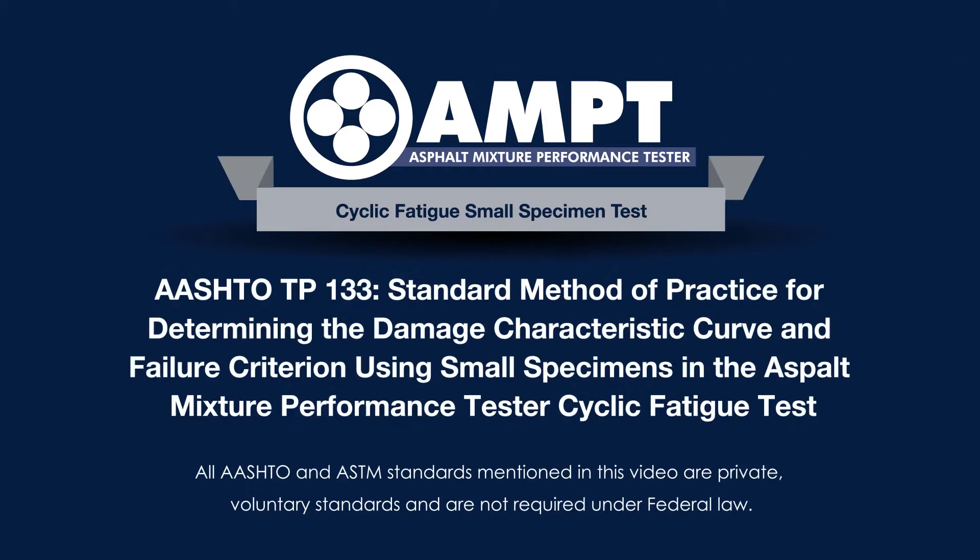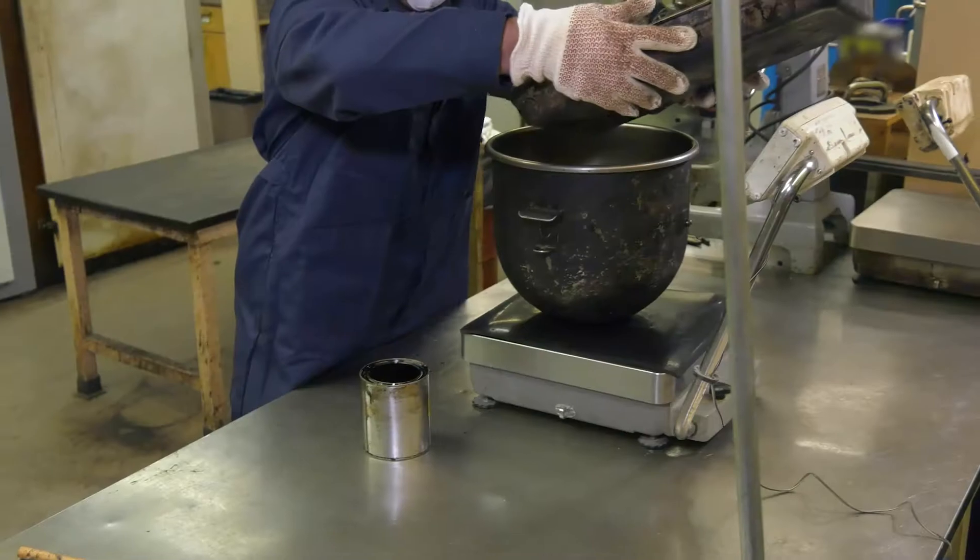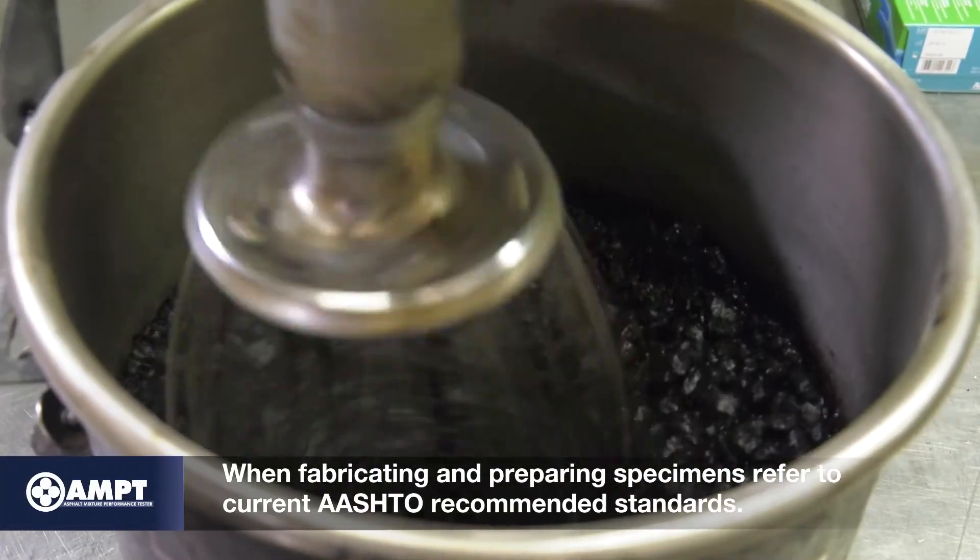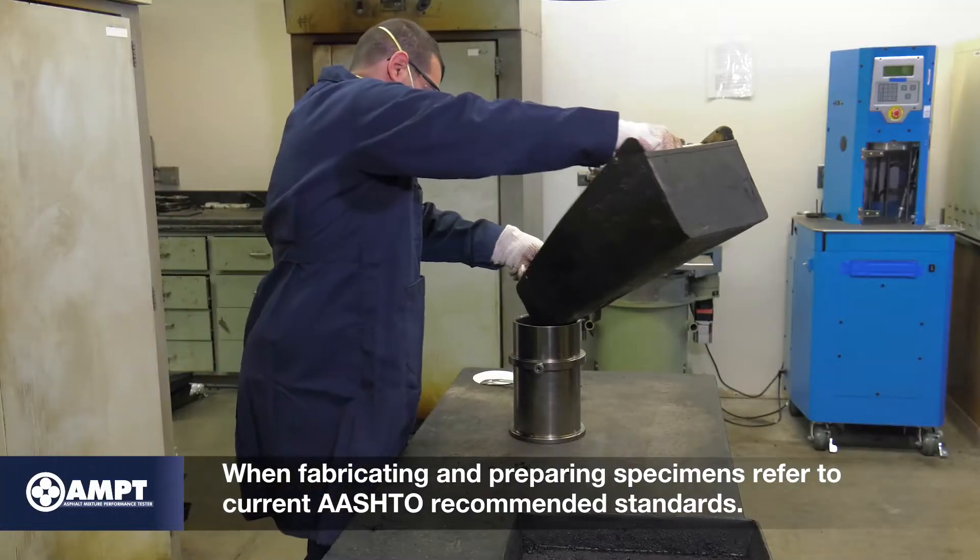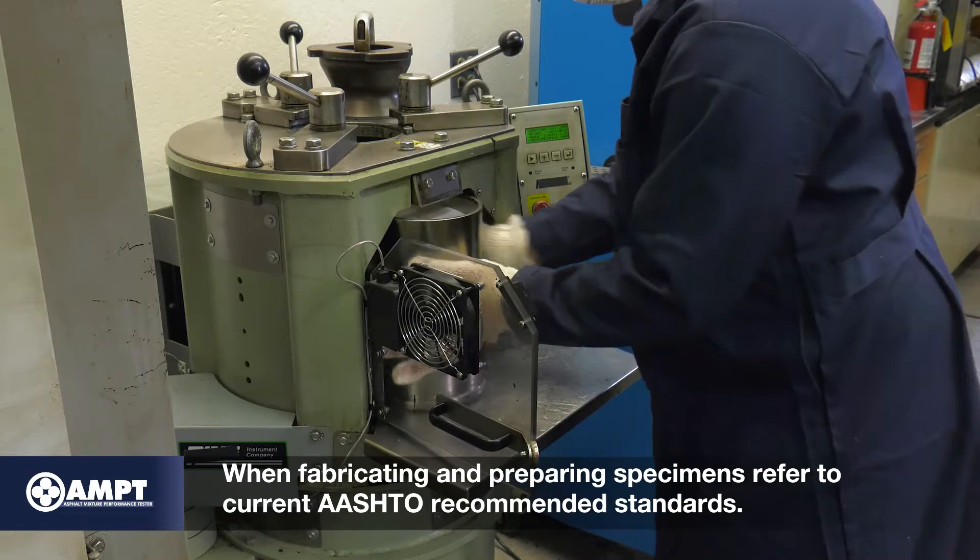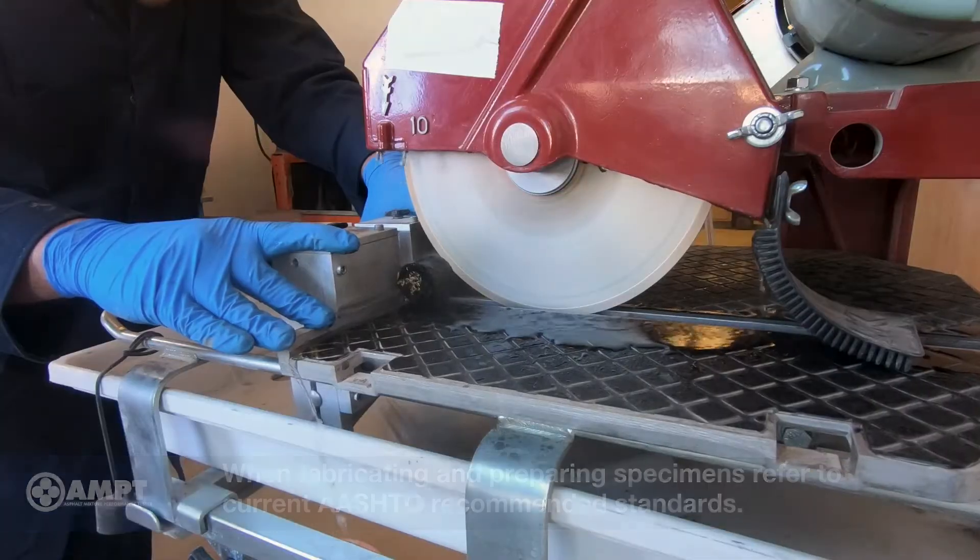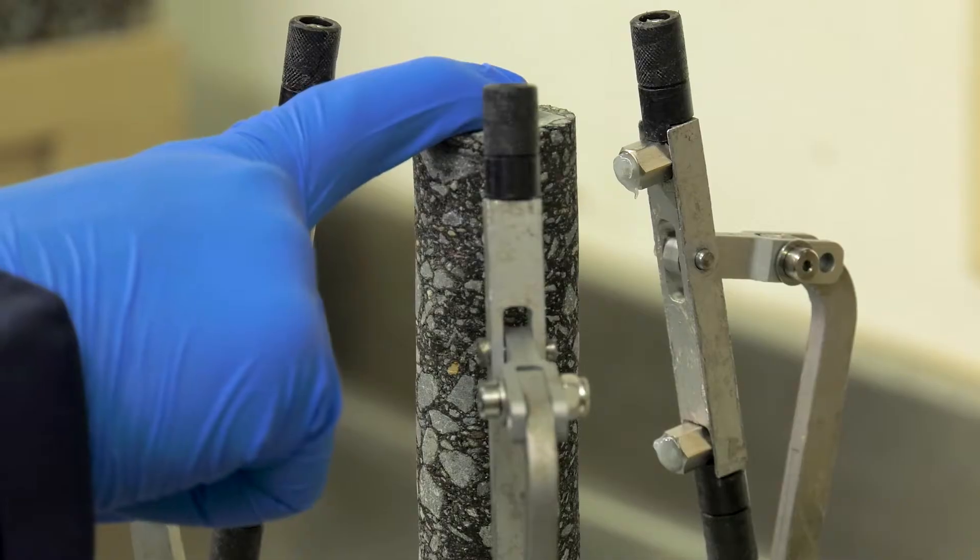This video demonstrates the cyclic fatigue small specimen test based on AASHTO TP-133. All AASHTO standards mentioned in this video are private voluntary standards and are not required under federal law. Before beginning this test you should prepare the test specimen to the target air voids as recommended by AASHTO PP-99. Refer to video 1 in this series for more information.